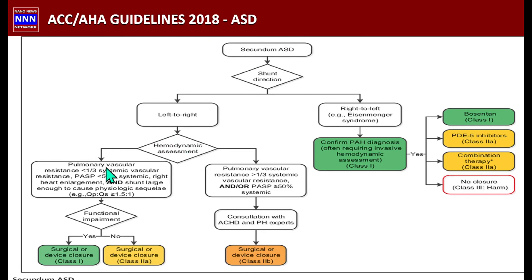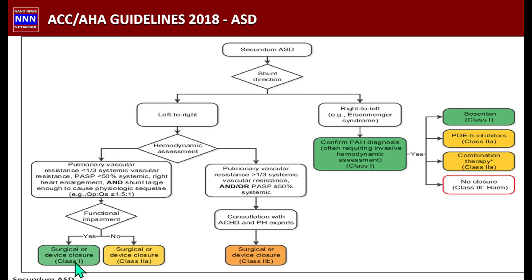The hemodynamic assessment evaluates: pulmonary vascular resistance less than one-third of systemic vascular resistance, pulmonary artery systolic pressure less than 50% of systemic pressure, right heart enlargement, and Qp:Qs ratio greater than 1.5:1. If these criteria are met, there is functional impairment from the ASD — causing symptoms and complications like cardiac enlargement, atrial fibrillation, and pulmonary hypertension — and the options are surgical or device closure.